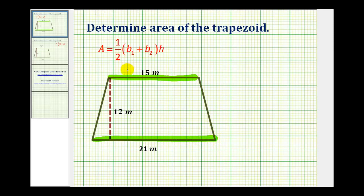For our formula, b₁ is equal to 15 meters and b₂ is equal to 21 meters. And the height h is equal to 12 meters.